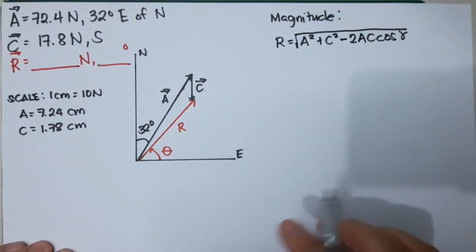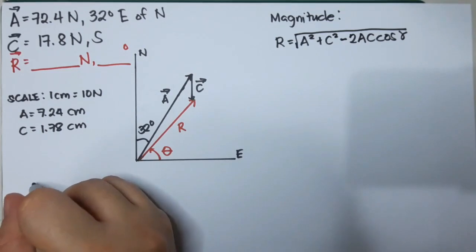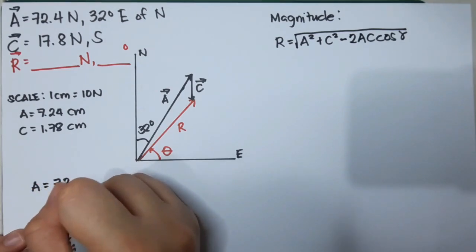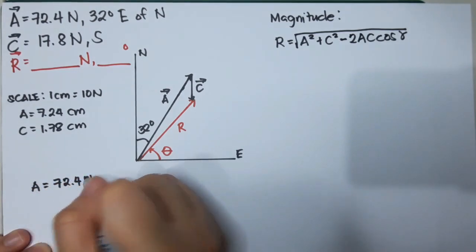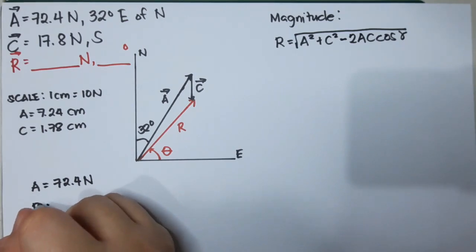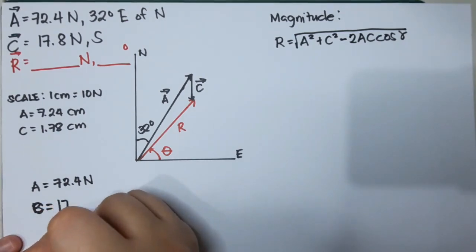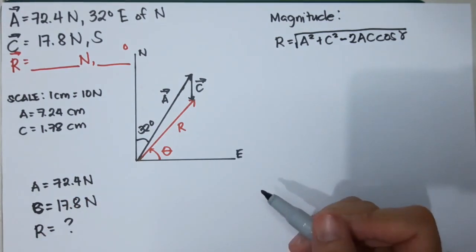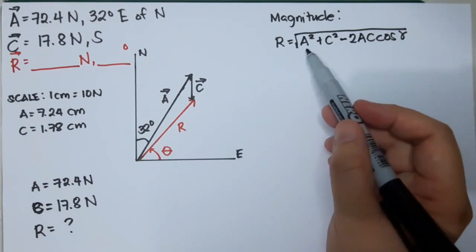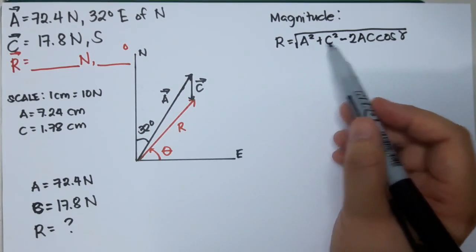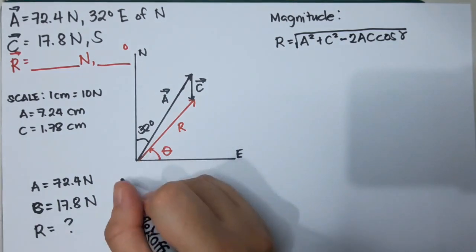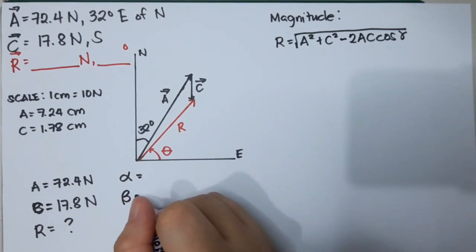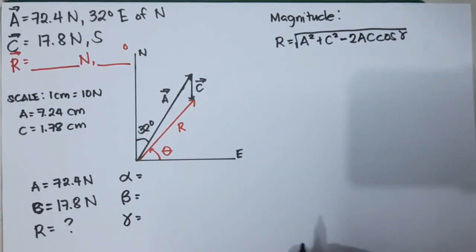Let's write the given. Vector A has a magnitude of 72.4 newtons, and vector C is 17.8 newtons. We are looking for R. To use the formula we need to know the two given vectors — vector A and vector C — and the angle gamma.